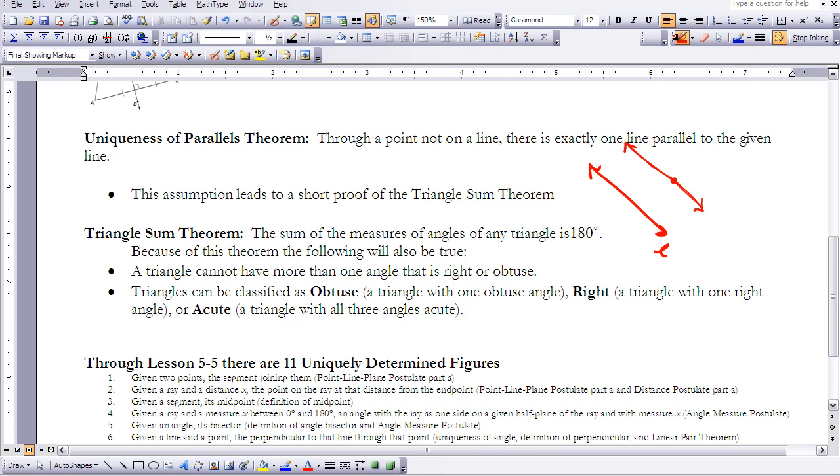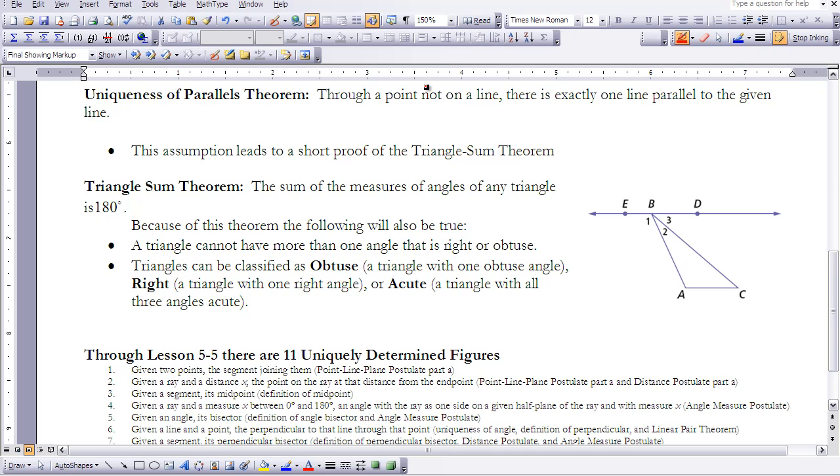And then this assumption leads to a short proof on the triangle sum theorem. The triangle sum theorem is something you've seen before and we actually used in some of the other lessons in this chapter. The theorem states the sum of the measures of angles of any triangle is 180 degrees. And we've been using that for several years.